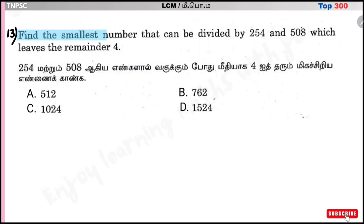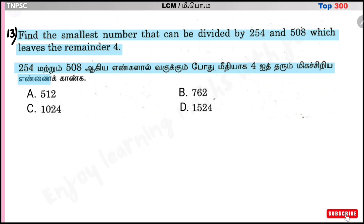Question number 13: Find the smallest number that can be divided by 254 and 508 which leaves the remainder 4. The smallest such number is LCM of 254 and 508 plus the remainder.